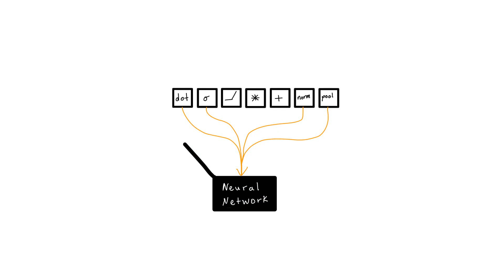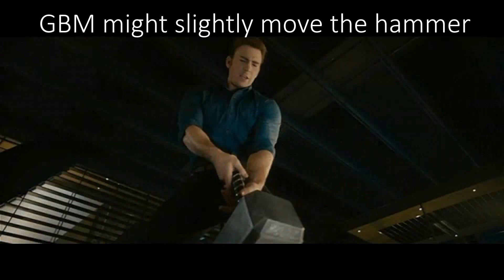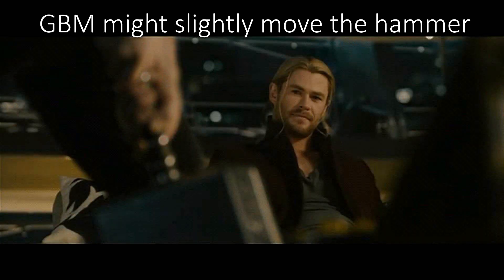This is because neural networks are combinations of matrix multiplications — referring to matrix multiplication, sigmoid or ReLU activation functions, element-wise multiplications of matrices, matrix additions, and normalizations. This is all beyond the understanding of human beings, unfortunately. Here, a GBM might be the solution — GBM might be worthy of lifting Thor's hammer, or it may at least move the hammer slightly, just like Captain America in that scene.